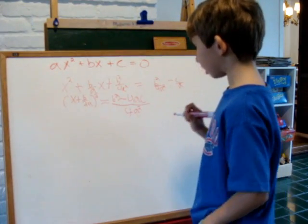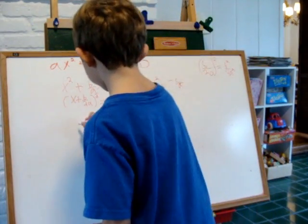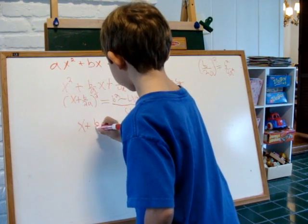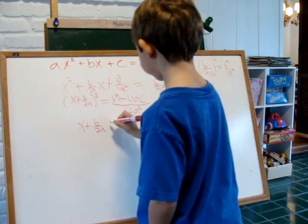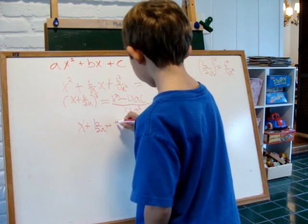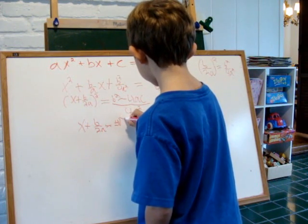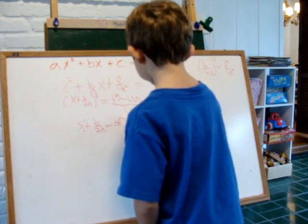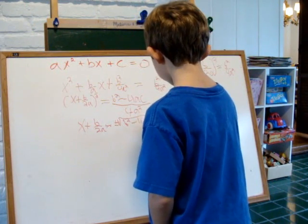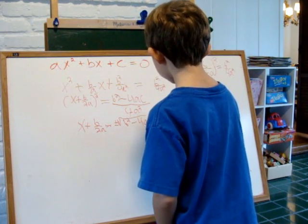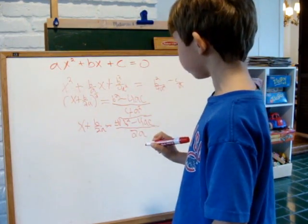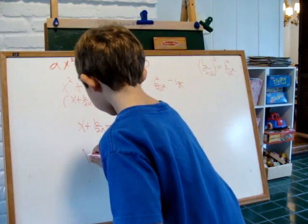Now we take the square root of both sides of the equation. So we get x plus b over 2a equals the plus or minus square root of b squared minus 4ac all over 2a.